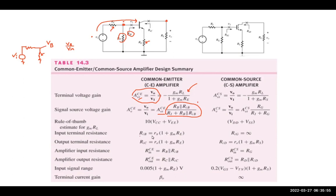The input impedance RIB is r_pi times one plus gm·RE, and similarly the output impedance is r0 times one plus gm·RE. This is the small-signal AC representation — the DC supply VCC becomes ground in small-signal analysis, so RL is connected to ground.